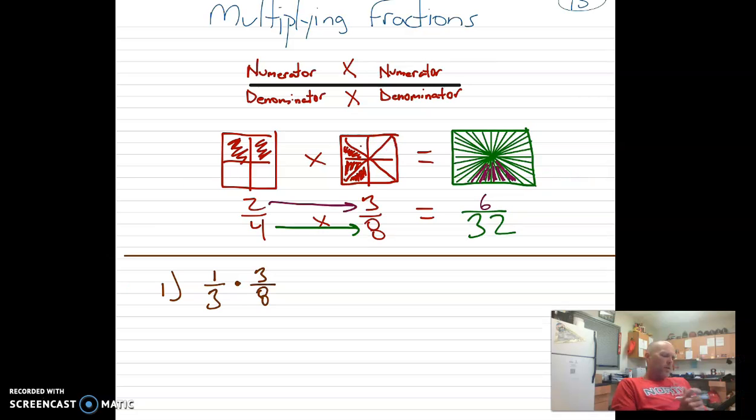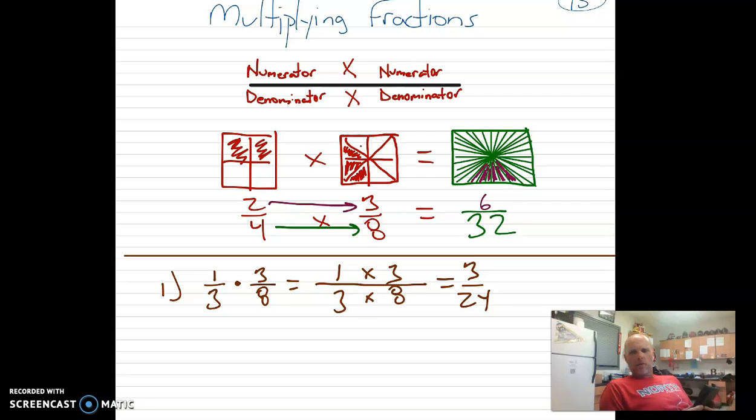So let's do, let's just start with 1 third times 3 eighths. One way that some people like to write it is like this. It's 1 times 3, and 3 times 8. It's just two simple multiplication problems, okay? So 1 times 3 is 3, and 3 times 8 is 24.